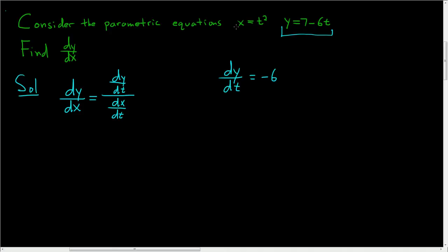And then here's x, and all we have to do is take the derivative of x with respect to t, so dx dt, and that's 2t.